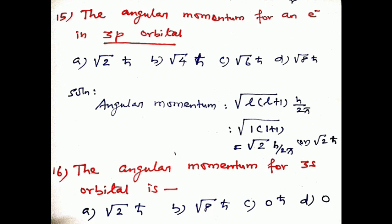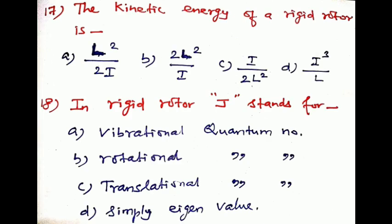Question number seventeen: the kinetic energy of a rigid rotor is dash. Options: a) L²/2I, b) 2L²/2I, c) I/2L², d) I³/L. The kinetic energy of a rigid rotor is L²/2I, so option a is the correct answer.